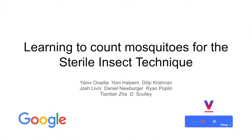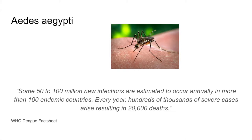Our work applies computer vision and statistics to mosquito population control. Mosquitoes are an incredibly harmful disease vector around the world. Dengue alone is responsible for 20,000 deaths and between 50 and 100 million infections each year.